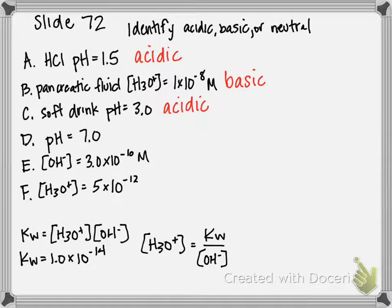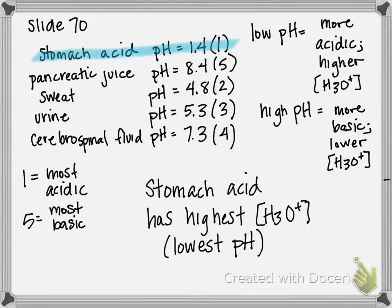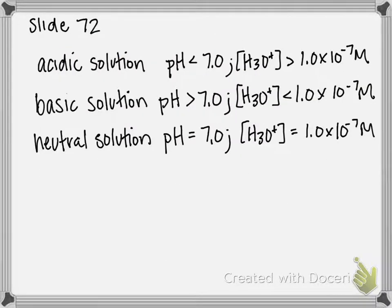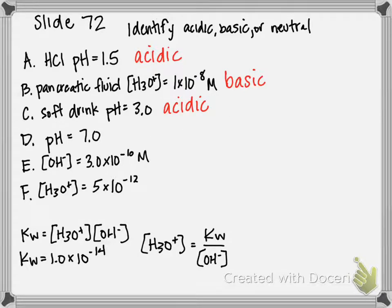For D, having a pH of exactly 7. If we go back to our slide, anything that has exactly 7 pH is considered neutral. So D is neutral.